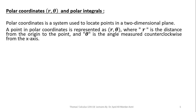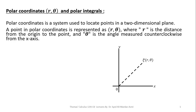Polar coordinate is a term which is used to locate a point in a two-dimensional plane. A point in polar coordinates is represented by r and theta, where r is the distance of the point from the origin and theta is the angle made in the counterclockwise direction. In this diagram, if there is a point in the two-dimensional plane, this is the distance r of this point from the origin and theta is the angle measured in the counterclockwise direction for this point.